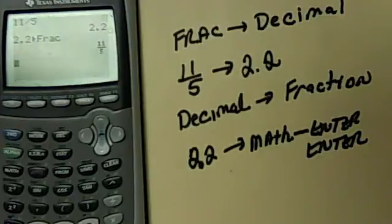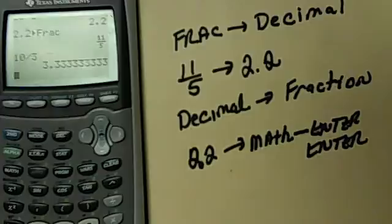So let's say if I had a fraction, 10 over 3. Now I could just hit enter, it doesn't really make sense, because if I hit enter, I have my decimal.